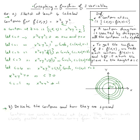For question B, we need to describe those contours and how they are spaced. The contours are circles centered at the origin (0, 0) with radius √c. Furthermore, the contours become more closely packed as we move away from the origin.